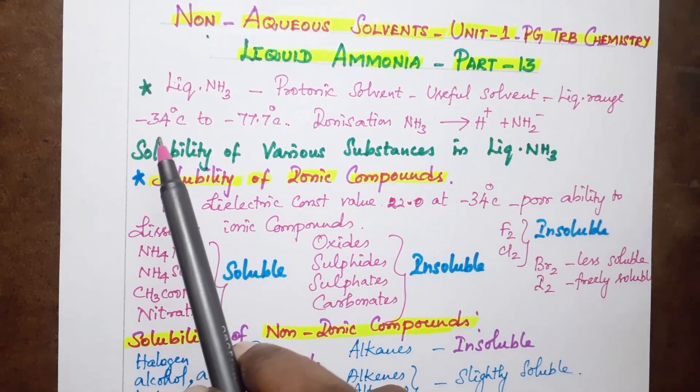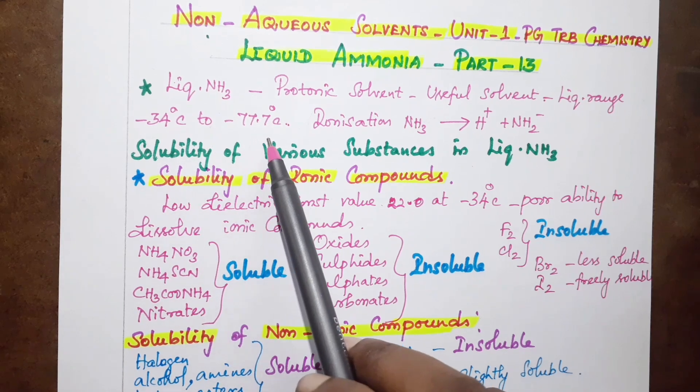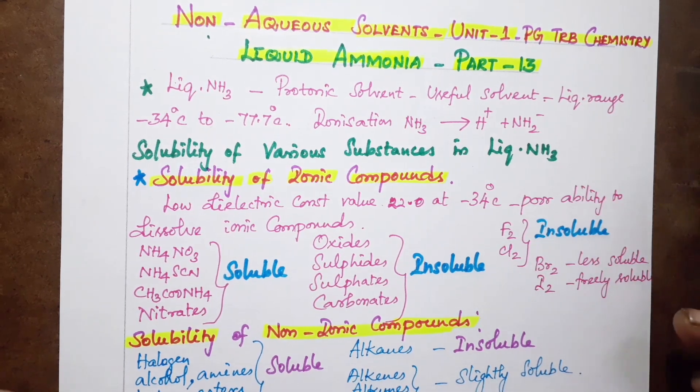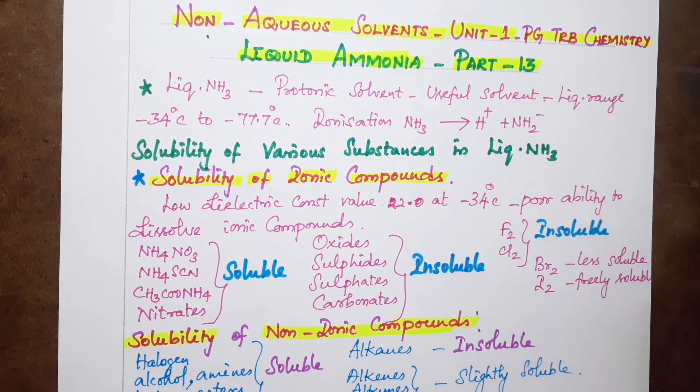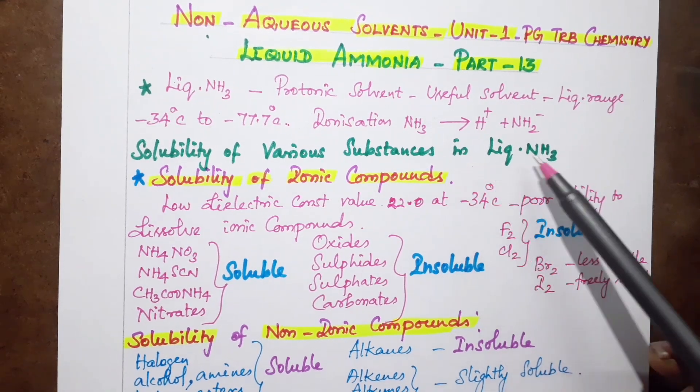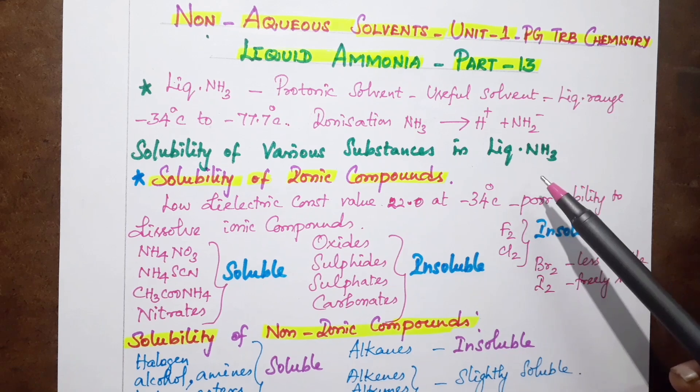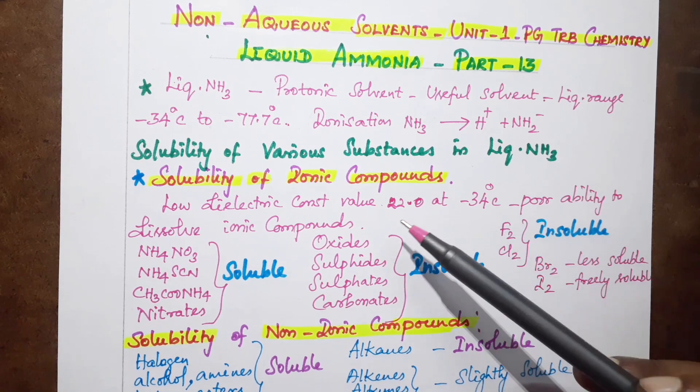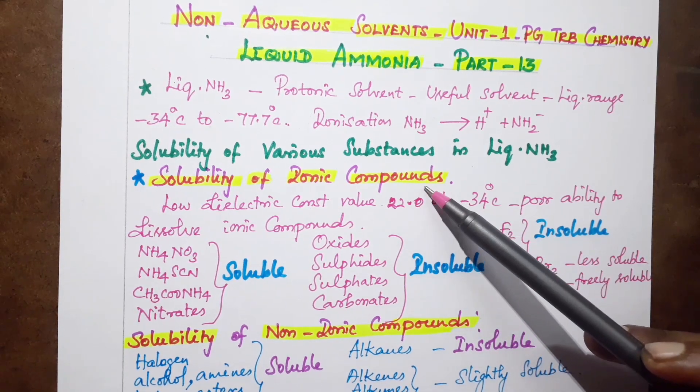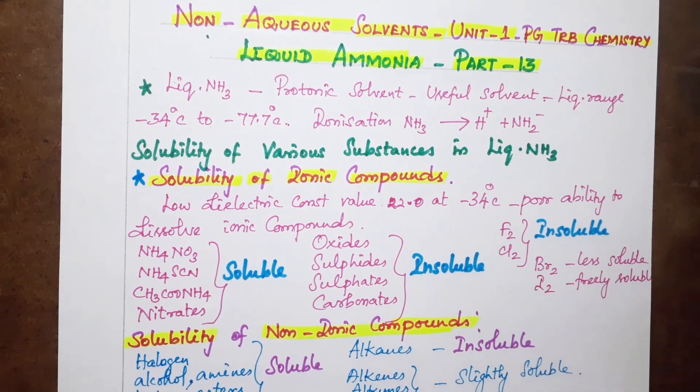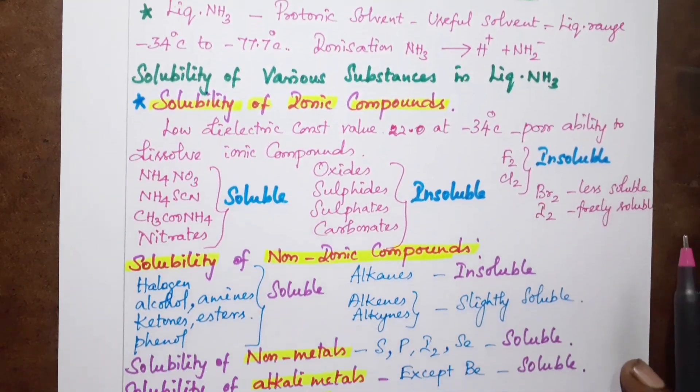The temperature of ammonia liquid range is minus 34 degrees. Now we look at the solubility of various substances in liquid ammonia. We have a topic of ionic compounds and non-ionic compounds. What is the solubility of ionic compounds?